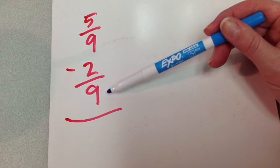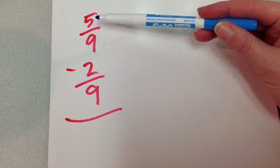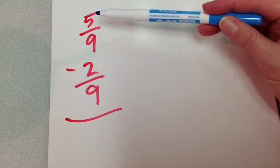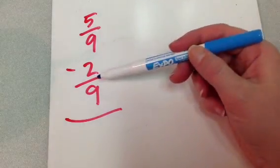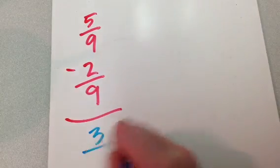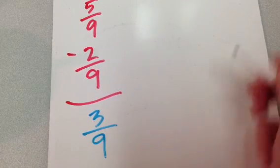So, I have two nines on the bottom, and so that means I have a common denominator. I can go ahead and subtract the two from the five. Five minus two is three. My bottom number is going to stay the same.